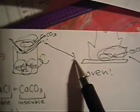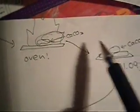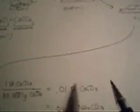The filter paper has water on it still, so we put it in the oven so that the water evaporates, and then we weigh the CaCO3 solid, which is 1.09 grams.